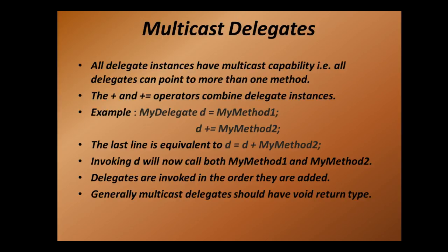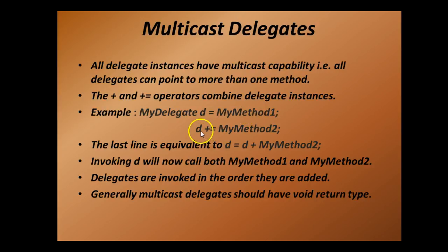All delegate instances have multicast capability — that is, all delegates can point to more than one method, and this is achieved with the help of the plus and plus-equals operators. In my previous lecture where I explained the concept of delegates, I was pointing to a square function. Now since there is a scenario where I have a cube function too, which gives me the cube of a number, I can use a single delegate instance to point to both of these methods using this syntax.